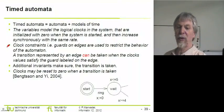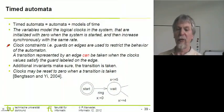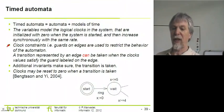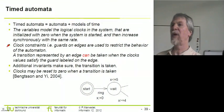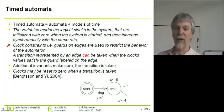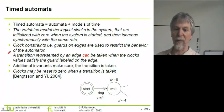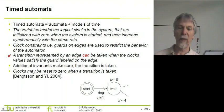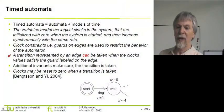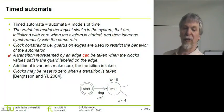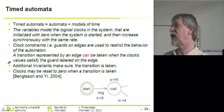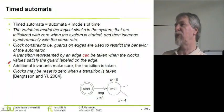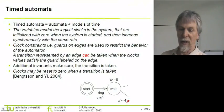We introduce so-called clock constraints which are guards on the edges. These clock constraints are used to restrict the behavior of the automaton, making it clock dependent or time dependent. A transition represented by an edge can be taken when the clock values satisfy the guard labeled on the edge. Such a transition does not need to be taken if that guard is met.